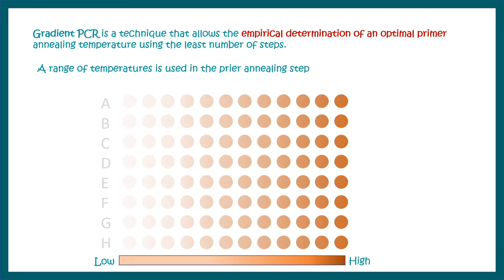So a range of temperatures is used in the primer annealing step instead of one particular temperature. If you look at a top view of the thermal cycler plate, this is how the temperature varies. And I'll tell you how exactly this is done.